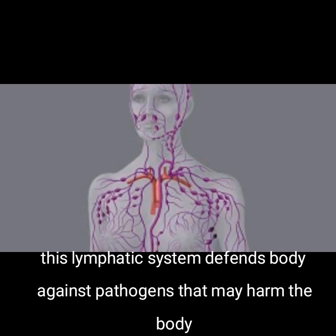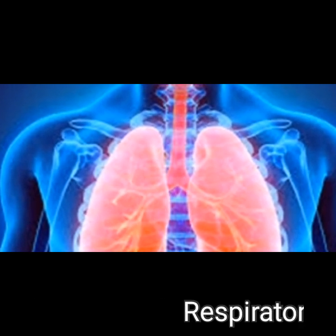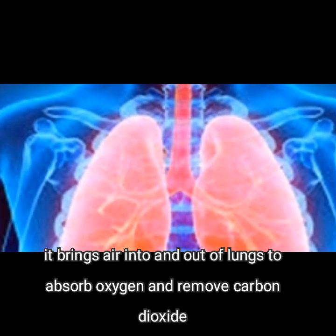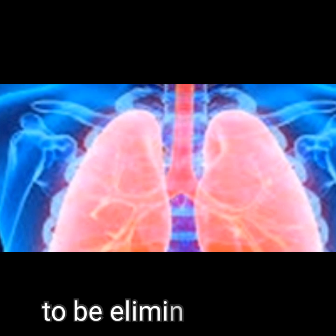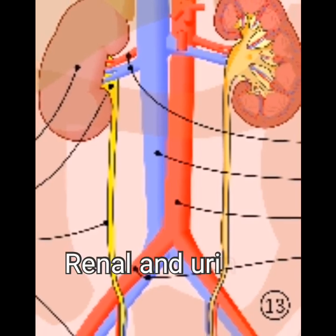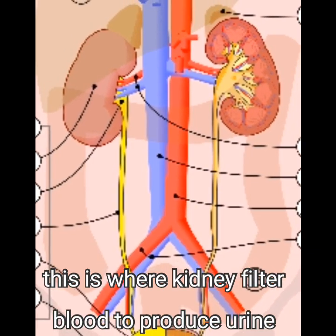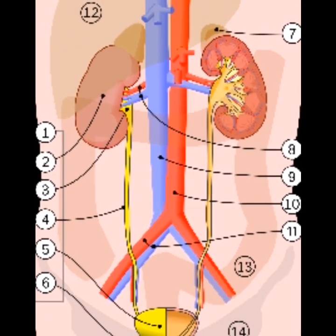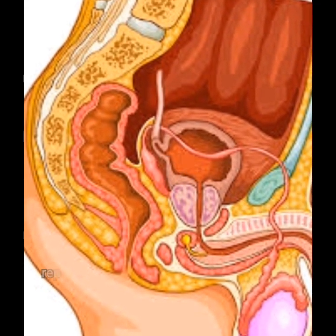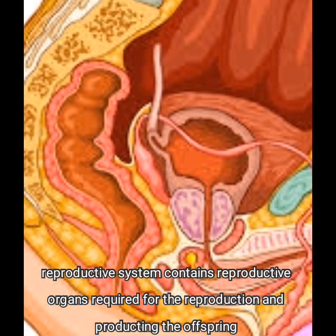The eighth system is the respiratory system. It brings air into and out of the lungs to absorb oxygen and remove carbon dioxide. The ninth is the renal and urinary system, where the kidneys filter blood to produce urine. The tenth is the reproductive system, which contains reproductive organs required for reproduction and producing offspring.